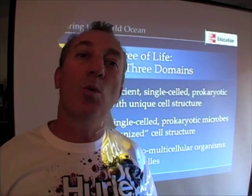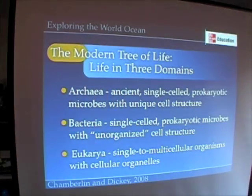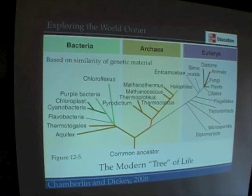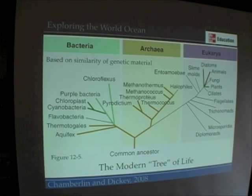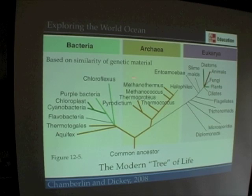We've only known about archaea for maybe a little over 20 to 30 years or so. Here's what it looks like when we create a phylogenetic tree based on the genetic relationships between organisms, and here's how the three groups look: bacteria in one group, archaea in another group, and eukarya in another group. This is what we call the modern tree of life — that's figure 12.5 in your book — and it's based on genetic similarity. We're not going to go into the details of how that's figured out, but scientists have determined this.